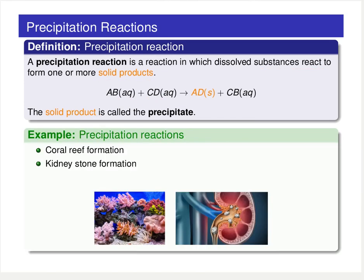A couple of interesting examples of precipitation reactions are coral reef formation and kidney stone formation. Both of these are examples where you have aqueous solutions — it could be seawater — and compounds fall out of that solution forming a solid, building up coral or building up kidney stones. In the case of the kidney, we have an aqueous solution.